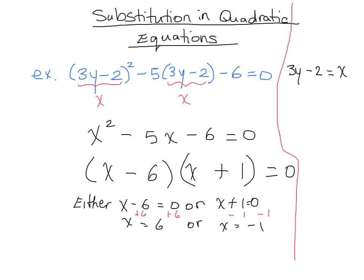We have here 3y minus 2 is, in the first case we have that x is 6, so let's go ahead and solve that. We can add 2 to both sides and we get that 3y is equal to 8. Now we can divide both sides by 3 and we get that y is equal to 8 over 3.